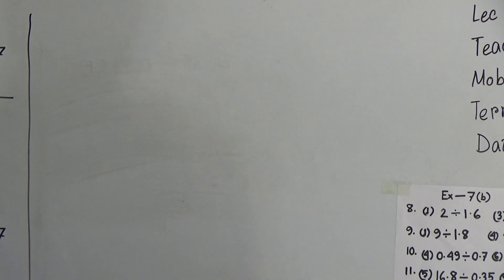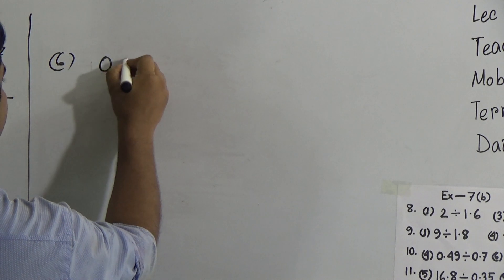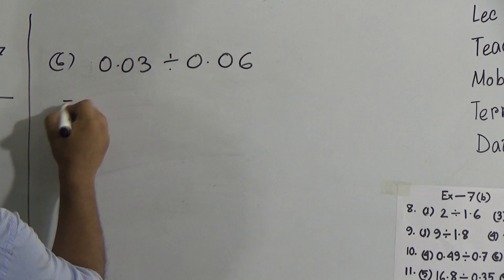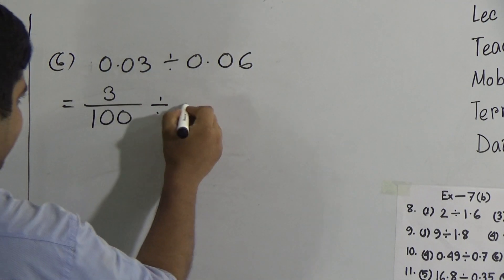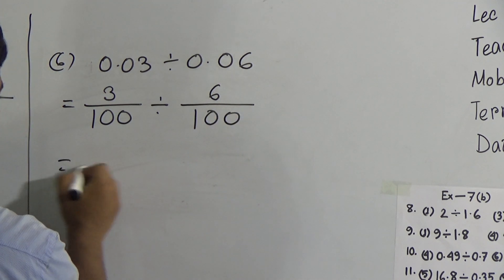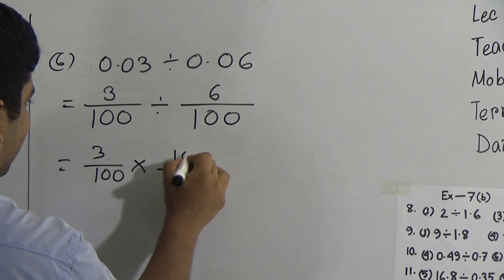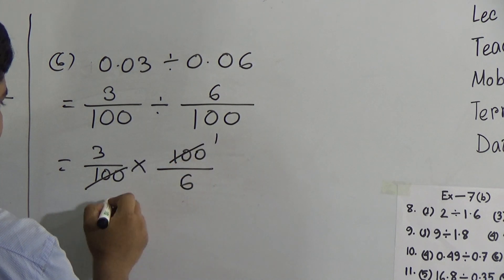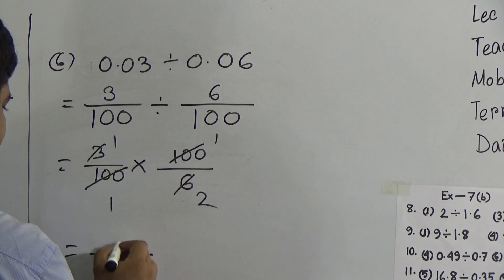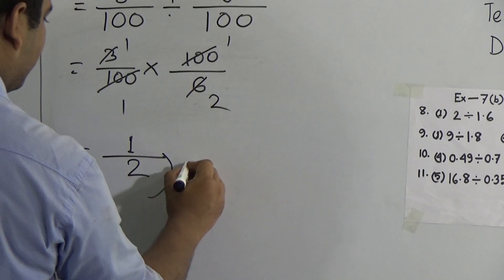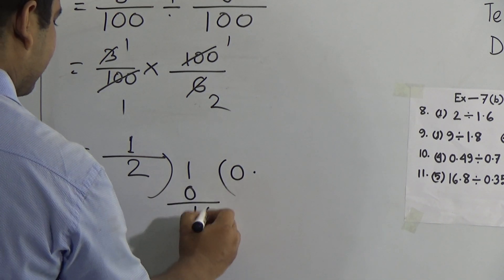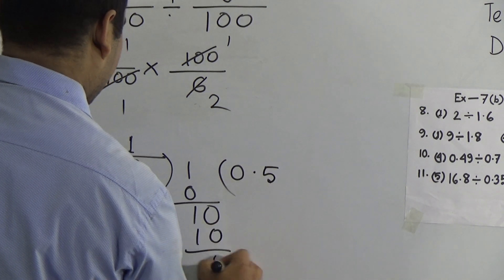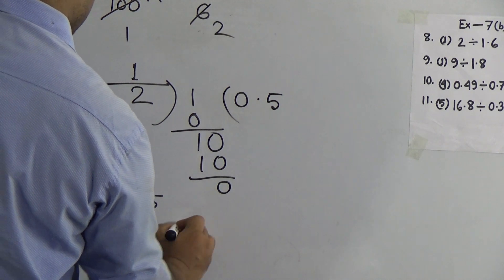Next, sub-question 6: 0.03 divided by 0.06. We write 0.03 as 3/100 (2 digits after the point) and 0.06 as 6/100. So 3/100 multiplied by 100/6. The 100s cancel, and we cut 3 and 6 by 3: giving 1/2. Dividing 1 by 2: in 1, 2 goes 0 times; with a decimal point, in 10, 2 goes 5 times — 5 twos are 10. So 0.5 is the answer.